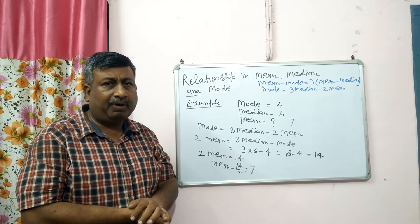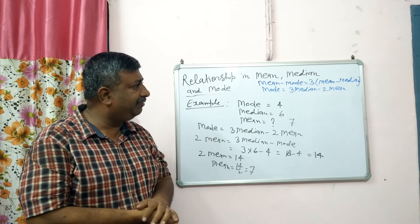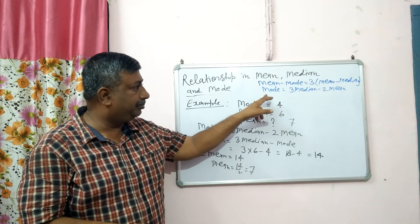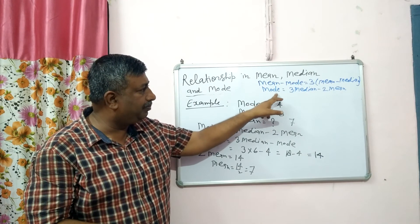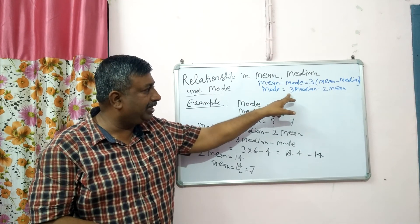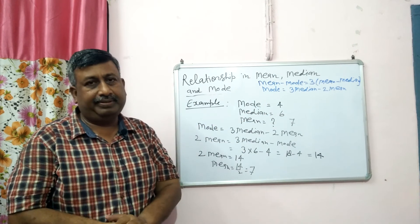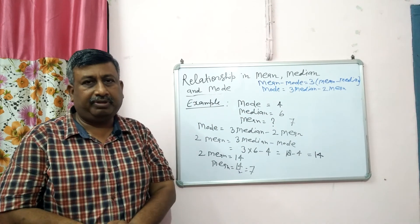In examinations this type of question may be asked. So remember the relationship: mode = 3 times median minus 2 times mean. Thank you very much.